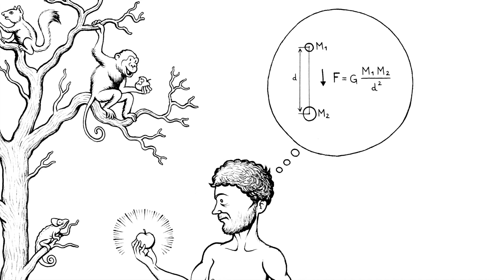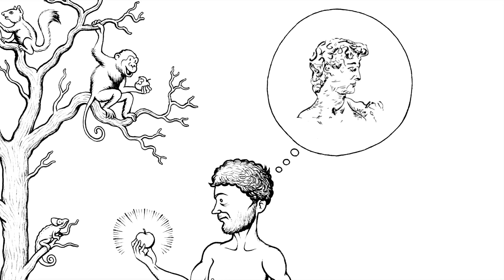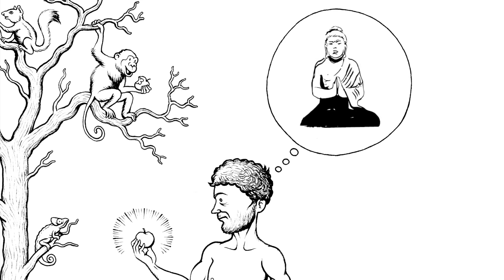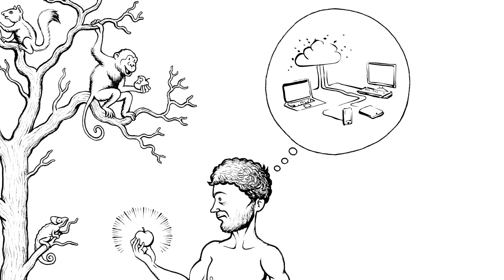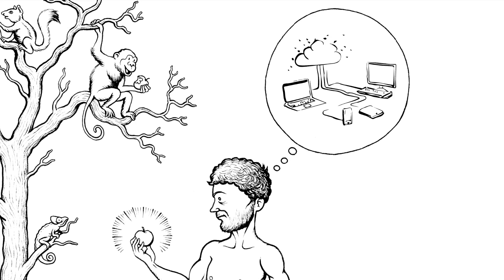Symbolic thought gave rise to language, art, music, religion, philosophy, science, and complex technologies that allowed us to circumvent evolutionary and environmental constraints.